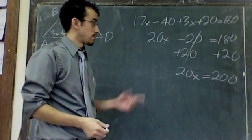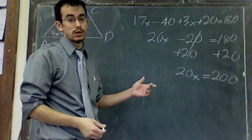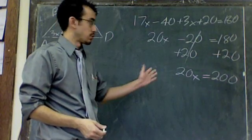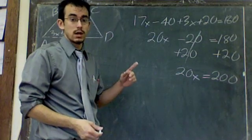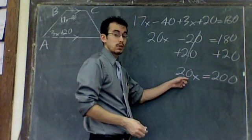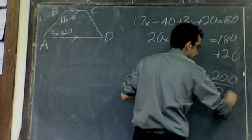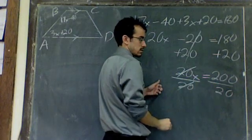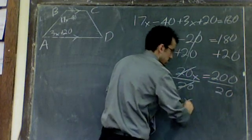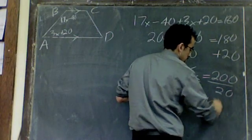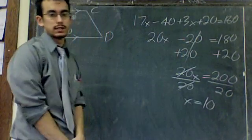Now we're going to solve this. My last step is 20 times X equals 200. Well, I don't care about multiplying 20 times X. I want to know what 1X is. So to work backwards, instead of multiplying by 20, do the opposite. Divide by 20 on both sides. These 20s will cancel, leaving me with X. 200 divided by 20 is 10. So we find out that X is 10.